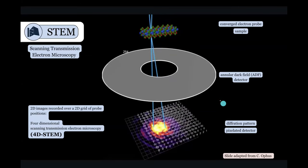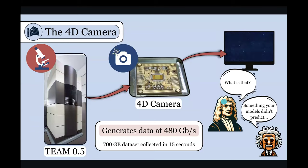And so this really ends up making really large data sets. And so this camera, this 4D camera that I was mentioning earlier, is installed on this microscope called the Team 0.5 at NSEM. And it generates data at 480 gigabits per second. And so that roughly corresponds to a 700 gigabyte data set that can be collected in about 15 seconds.